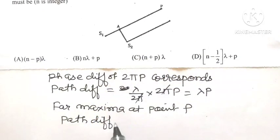What is that path difference? It is S1A minus the path difference pλ. And this path difference must be an integral multiple of wavelength λ.